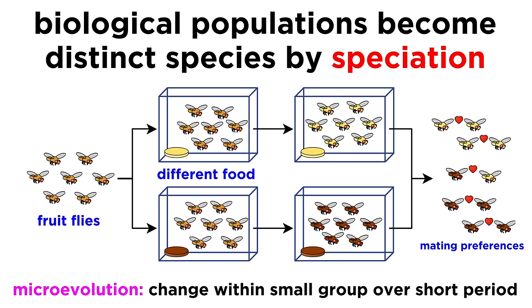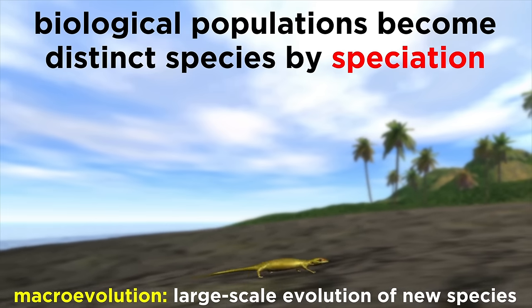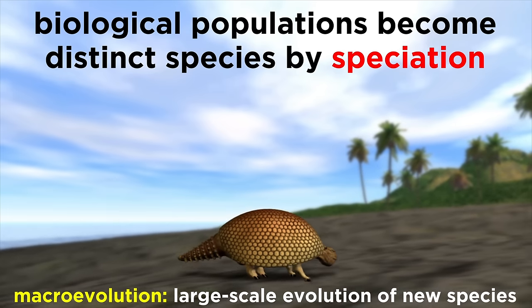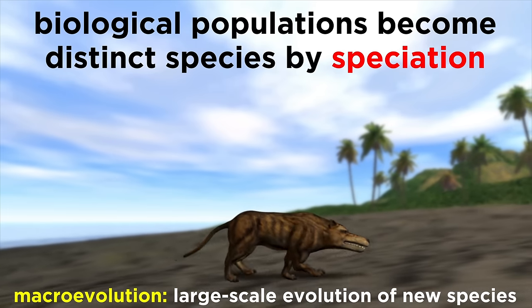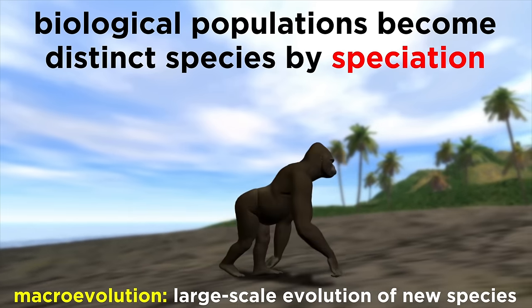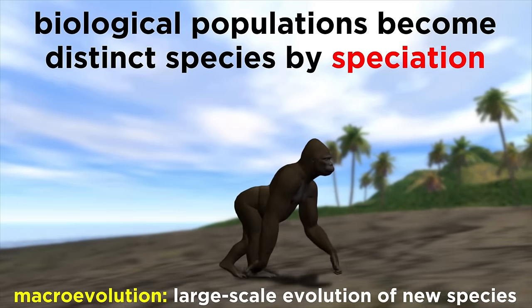The process by which one species produces a new species is called speciation, and this is the bridge between microevolution, which looks at changes in allele frequencies, and macroevolution, which is a broad pattern that produces new organisms that look totally different from preexisting ones.